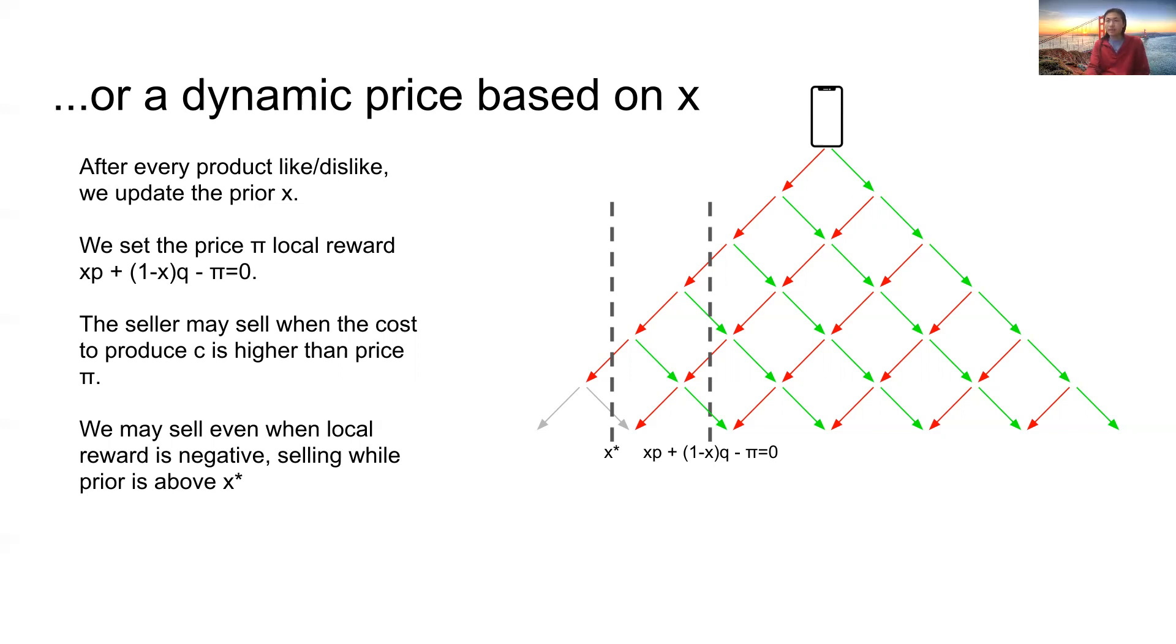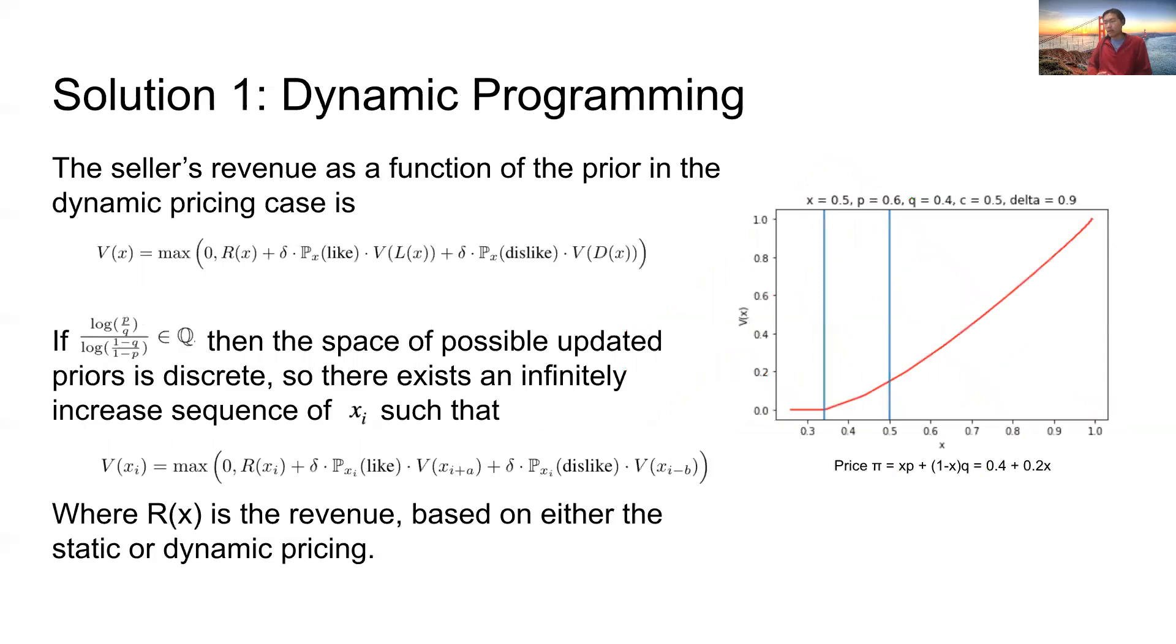With these two pricing methods, we present two approaches to computing the product expected revenue, the first of which is dynamic programming. We showed that the seller's revenue as a function of the prior in the dynamic pricing case is given by the expression on the slide. And if P and Q satisfy certain conditions, then the space of possible priors is discrete, such that we can then compute the expected revenue in an efficient manner.